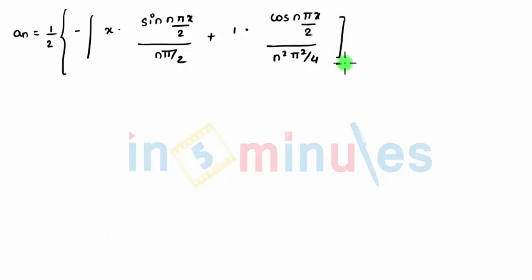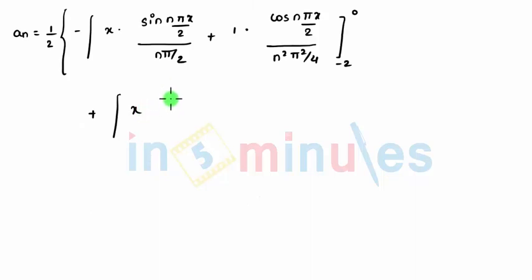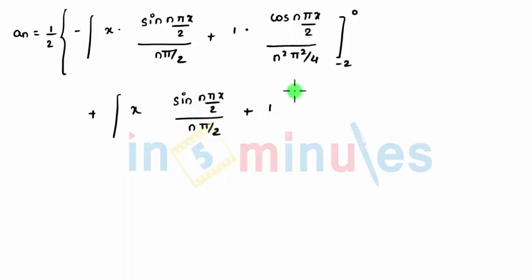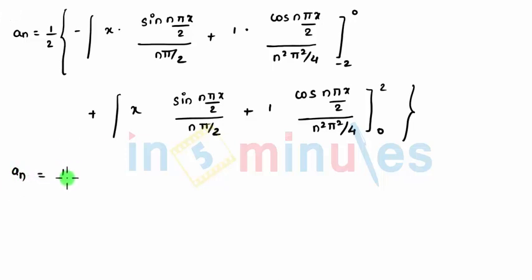The limits of the first part were −2 to 0, so I'll keep a note of that. The next term comes to be x times cos(nπx/2), so x times integration of cosine is sine(nπx/2) divided by nπ/2, minus 1 times integration of sine — which is minus cos — so this becomes plus cos(nπx/2) divided by n²π²/4. The limits are now 0 to 2, so let's put in the limits.